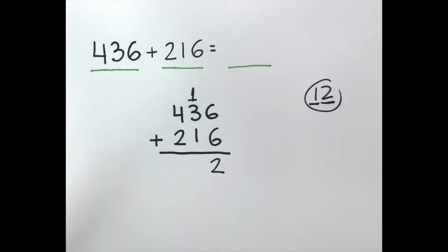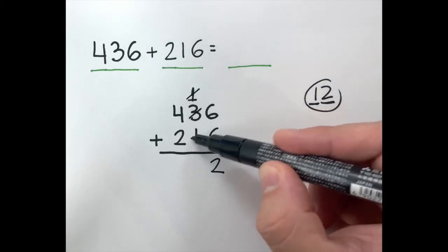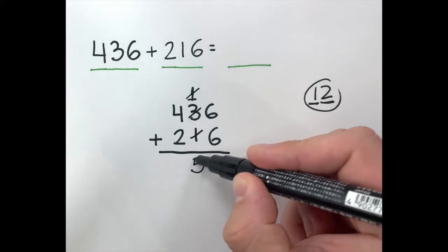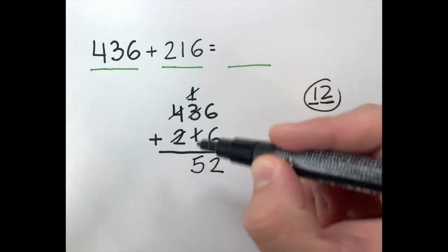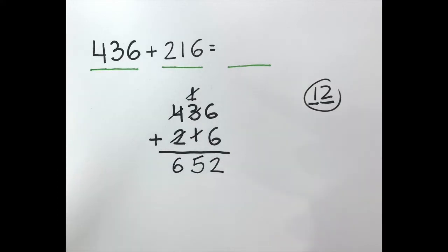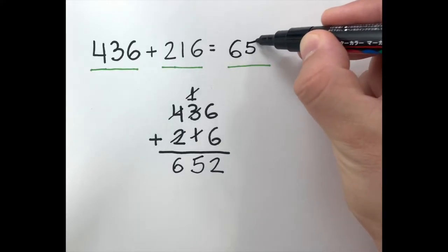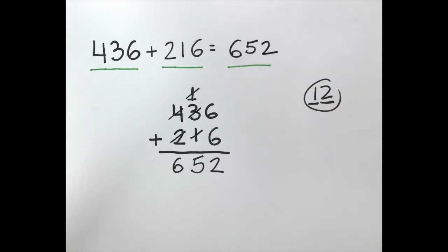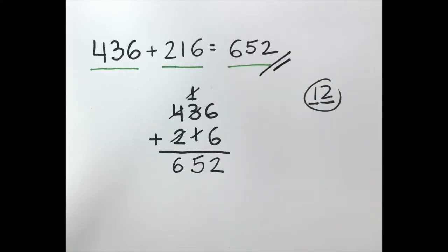Now I look at my tens place and add those numbers: 1 and 3 equals 4, and 4 and 1 equals 5, so I have 5 on the tens place. Then I look at my hundreds place: 4 plus 2 equals 6. My sum is going to be 652. That's the answer to my addition equation. I hope that's the same sum you found when you solved it by yourself!